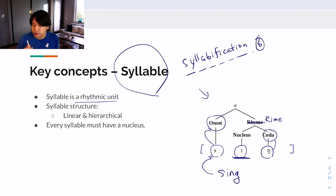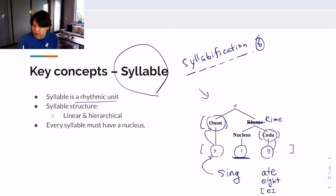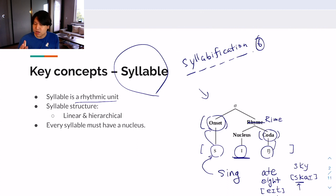In English, there are words without an onset or without a coda. For example, a word like 'eight' — if you transcribe this word, it should be this or this based on your dialect. As you can see, there is no consonant at the beginning, so this is a word without an onset. Think of a word like 'sky.' It has two consonants at the beginning — a consonant cluster that serves as the onset. But there is no consonant at the end of this word, so there is no coda. This is a coda-less syllable: 'sky.'